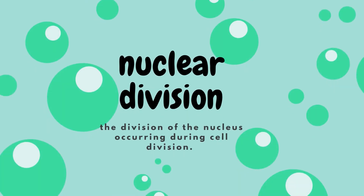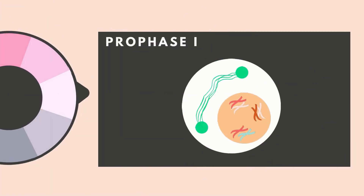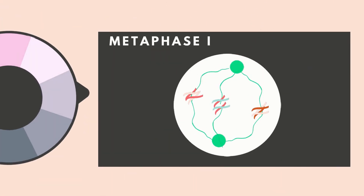Unlike mitosis, meiosis undergoes two successive rounds of nuclear division. The first cell division in meiosis is called reduction division, in which homologous chromosomes are separated. During Prophase I, chromosomes condense and become visible inside the nucleus, the nuclear membrane dissolves, homologous chromosomes form bivalents, and crossing overs occur. The next phase is Metaphase I, where spindle fibers from opposing centrosomes connect at the centromeres and align them along the middle of the cell.